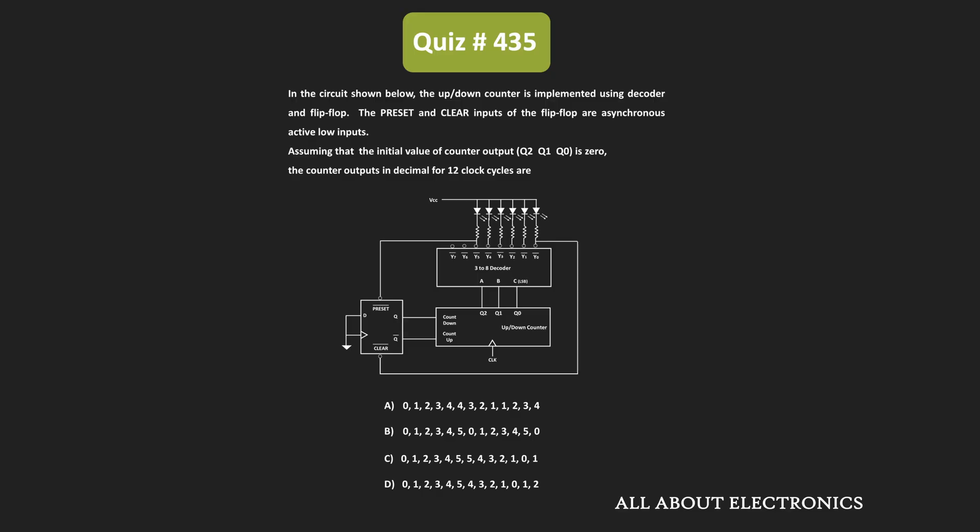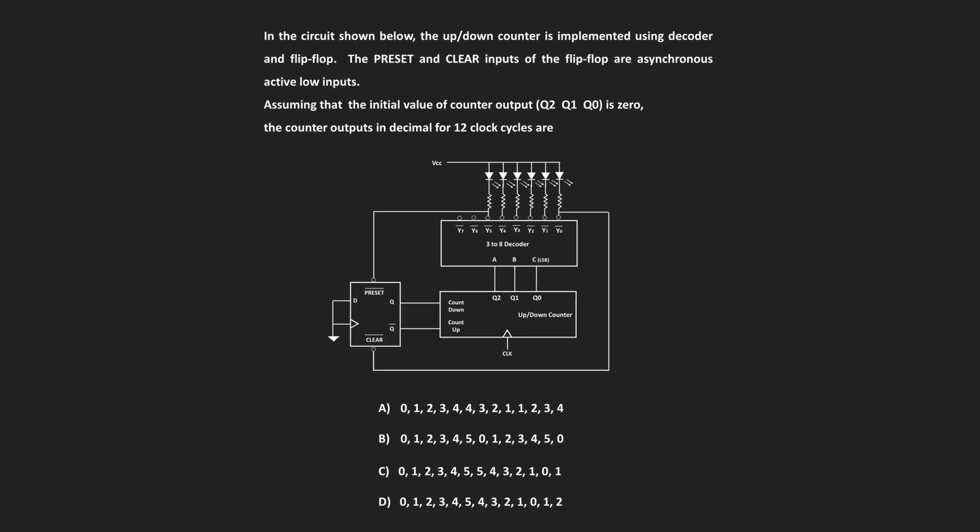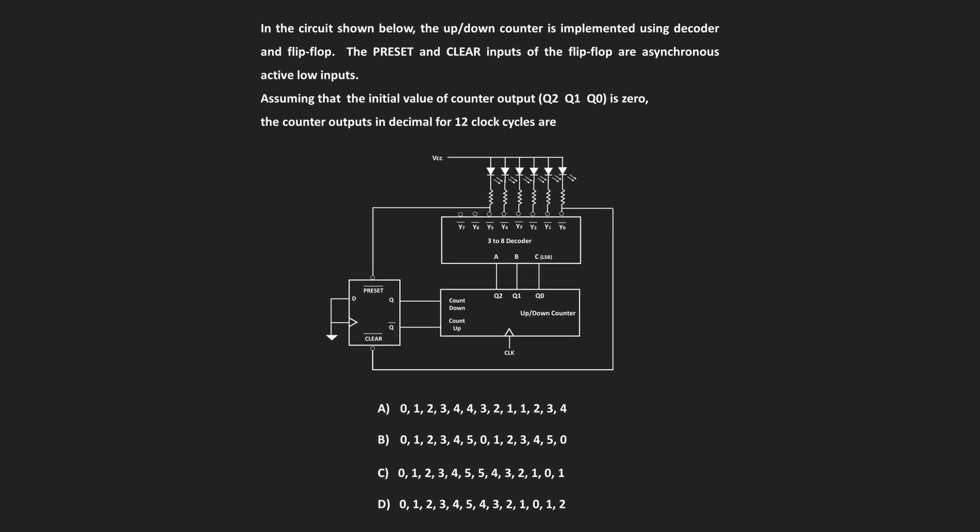Hey friends, welcome to the YouTube channel All About Electronics. So in this question, we have been given this counter-based circuit and we have been asked to find the counting sequence of the given circuit for the first 12 clock cycles. To find that, first let us understand the working of the given circuit.